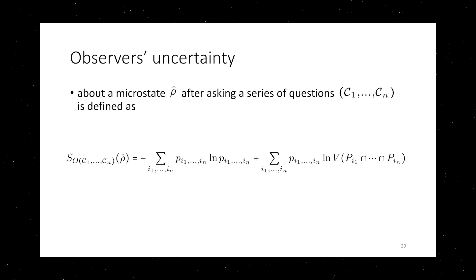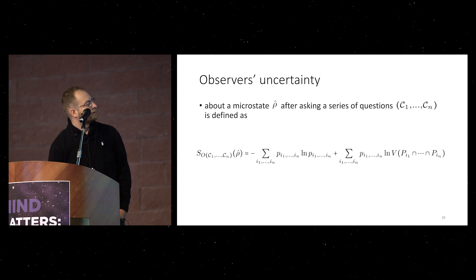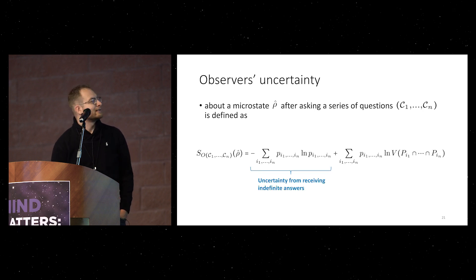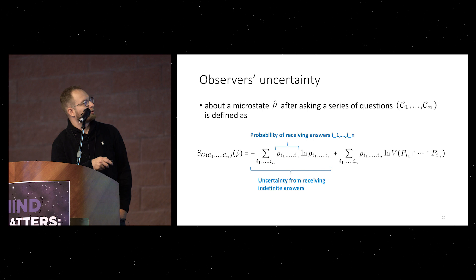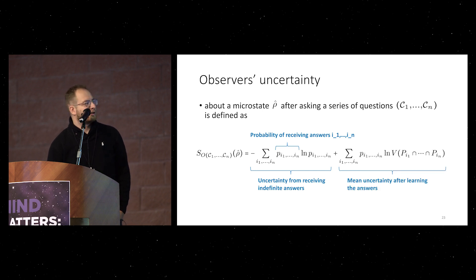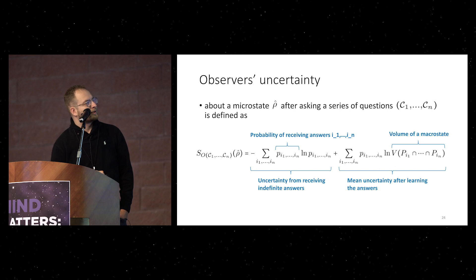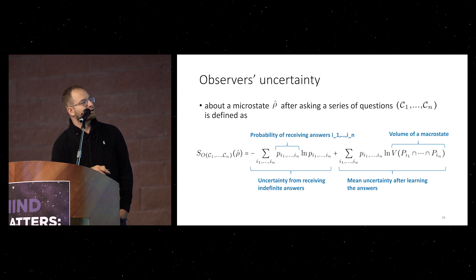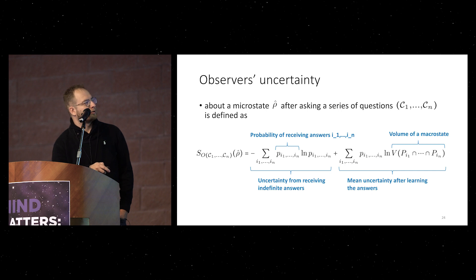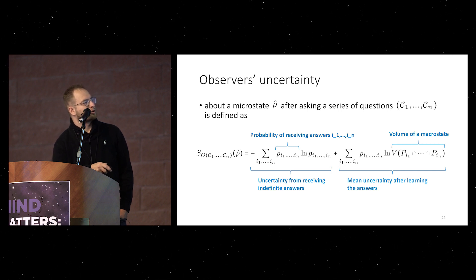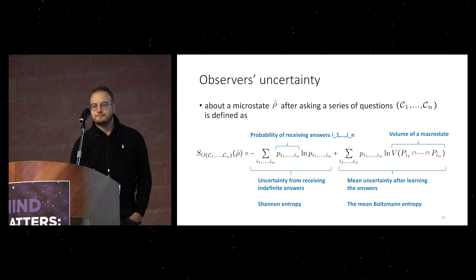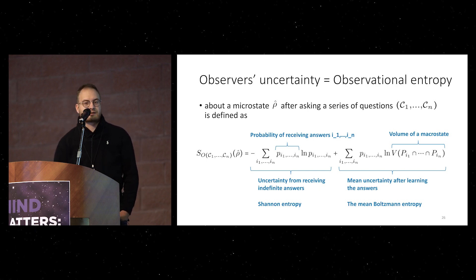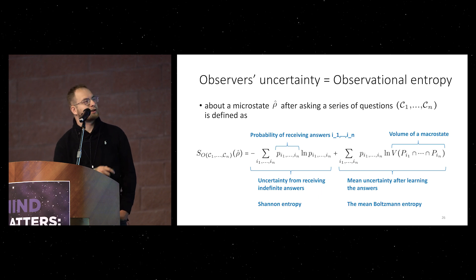And now this motivates us to introduce the definition. So, Observer's uncertainty about the microstate rho, after asking a series of questions, is defined as uncertainty from receiving indefinite answers, where these are the probability of receiving a set of answers in this order, I1 up to IN, plus the mean uncertainty after learning the answers, where this is volume of macrostate. You can also see that this is the Boltzmann entropy, and these are the probabilities, so this together gives you the mean Boltzmann entropy, and this part here is the Shannon entropy. And what we did, we just called this entropy, this sum, an observational entropy.